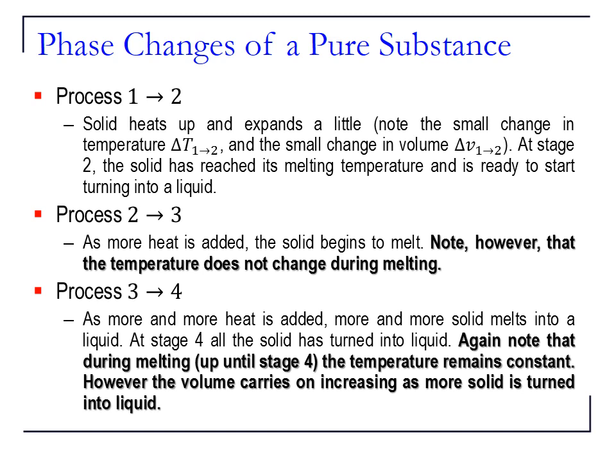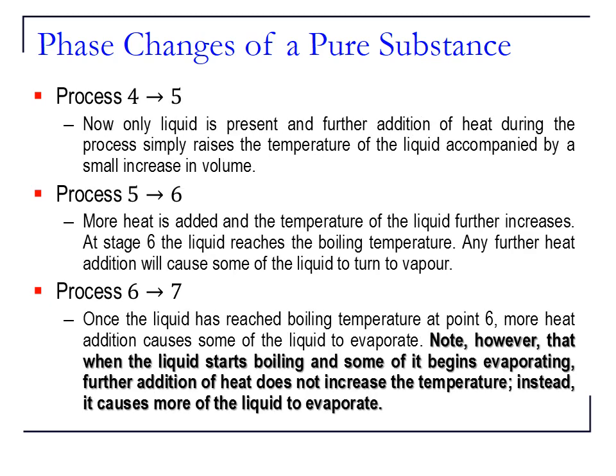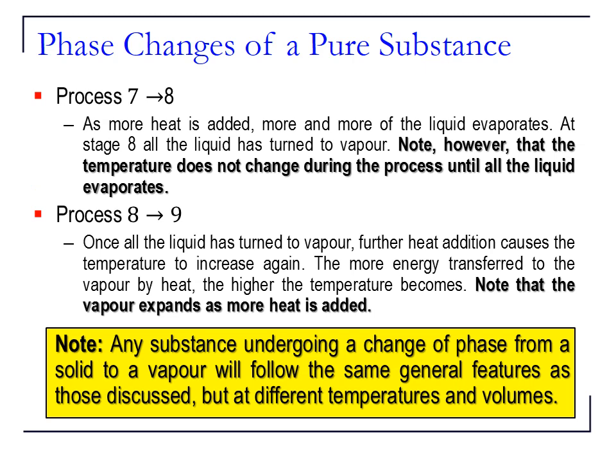These pages summarize what I have explained, covering processes 1 to 2, 2 to 3, 3 to 4, and then processes 7 to 8 and 8 to 9. This is a general process for any substance undergoing phase changes from solid to liquid to vapor — any substance will follow this similar general path, though it may happen at different temperatures and volumes.